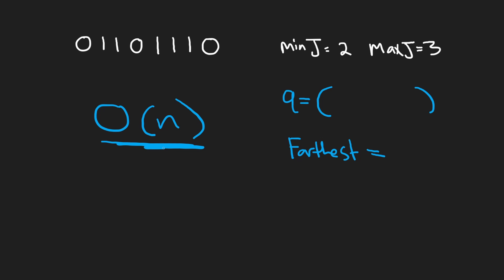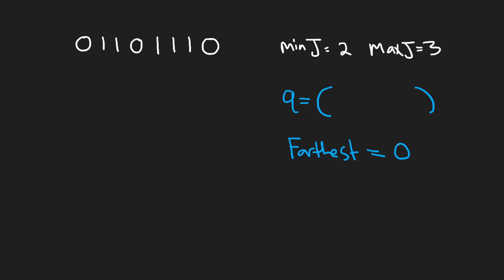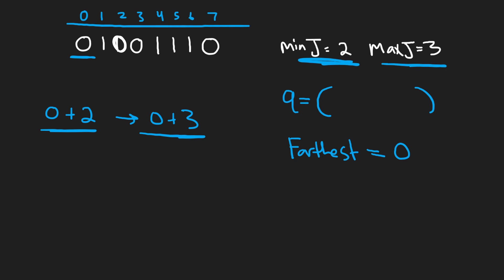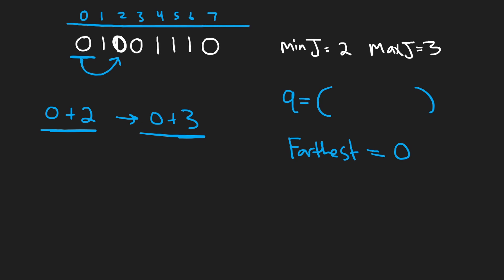We're going to use a queue structure for BFS, and we'll maintain the 'farthest' variable — the farthest index we've reached and added to our queue — so we don't repeat values. If we do repeat values, the time complexity grows to O(n²), and we want to keep it O(n) to pass on LeetCode. Initially, farthest is zero because we're starting at index 0. From index 0, we jump to positions i+min through i+max, i.e., index 2 and index 3.